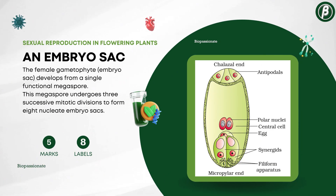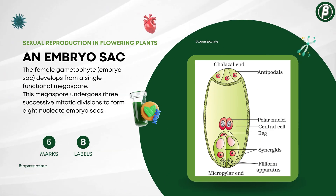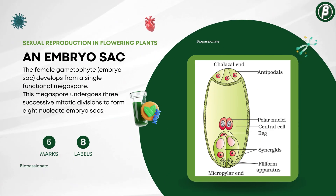Number 3: Structure of an embryo sac, for 5 marks with a minimum of 8 labels.